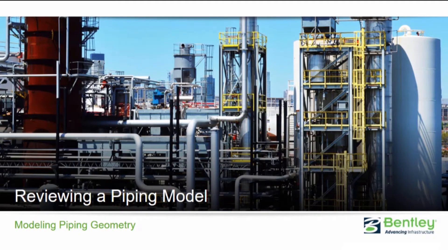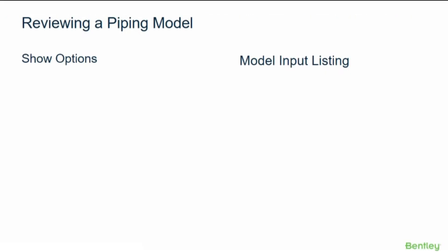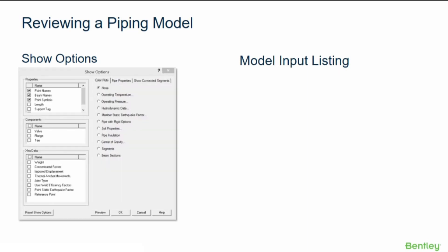Next we will review our piping model. We can use the show options and the model input listing to check our piping model. The show options ribbon and dialog provide a number of options to plot and review the data and components in the model.